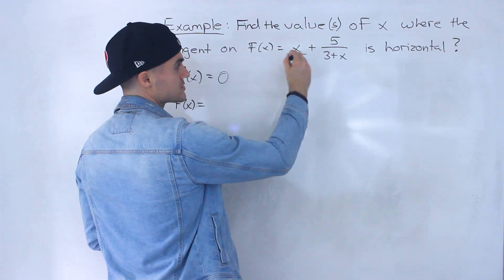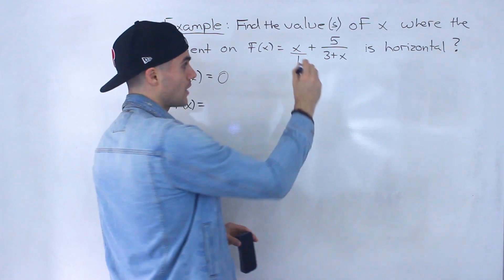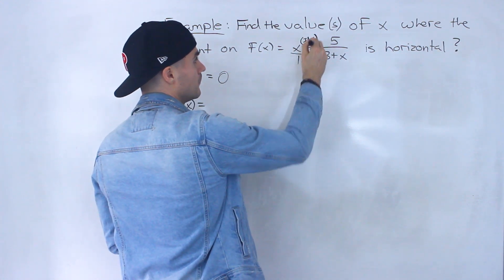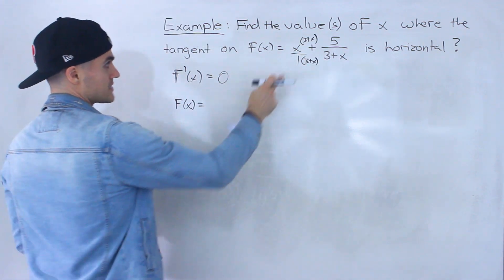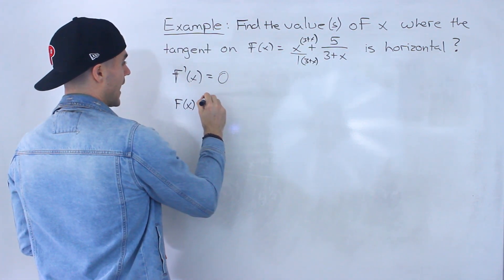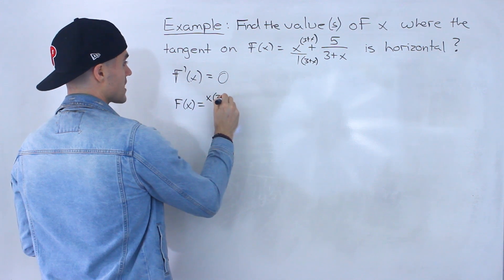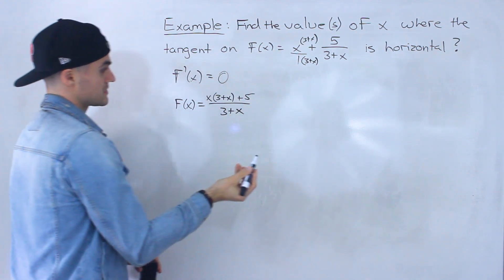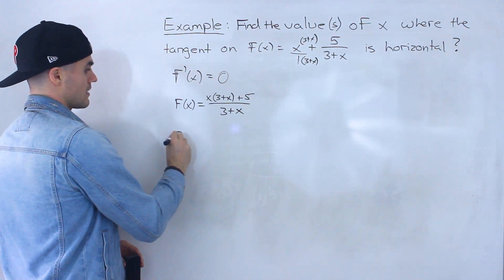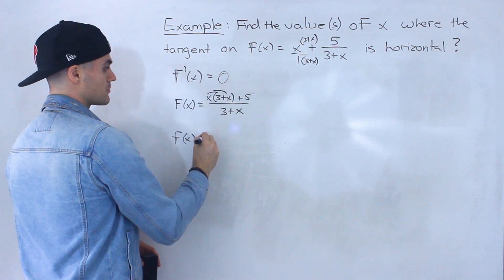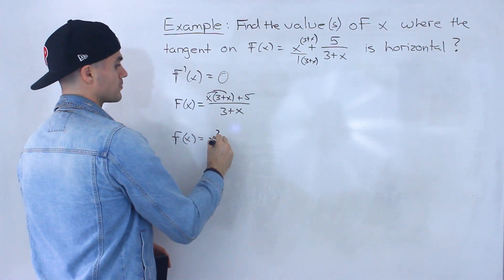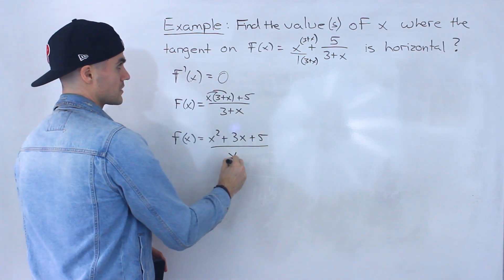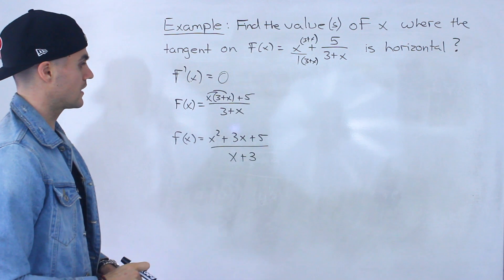So this x is over 1, so to add these two fractions you need a common denominator. I'm going to multiply this by (3+x), multiply the top by (3+x). And so this function can be rewritten as [x(3+x) + 5] all over (3+x) like that. And then if we distribute this x inside the bracket we would end up with (x² + 3x + 5)/(3+x), or I'm just going to write x+3 like that.